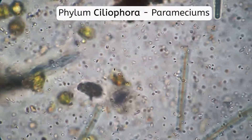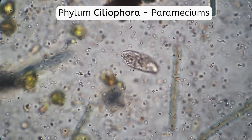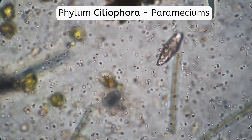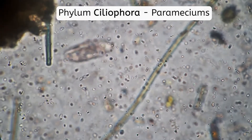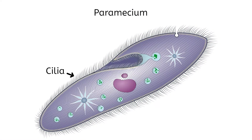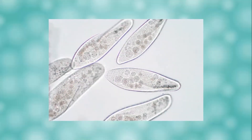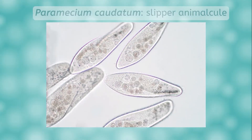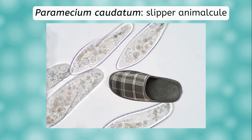The Ciliophora phylum, known for Paramecium, thankfully offers a reprieve from scary things that can kill us. These cute little creatures are harmless and even help maintain healthy ecosystems. They move by means of cilia, which are small hairs covering the outside of their cell membranes. One of the most well-known species of Ciliophora is Paramecium caudatum. Early biologists, upon seeing it under the microscope for the first time, referred to it as the slipper animalcule.